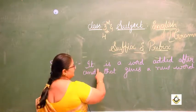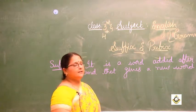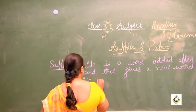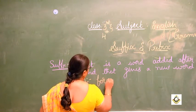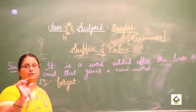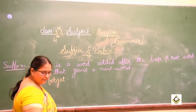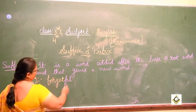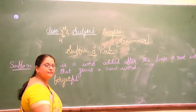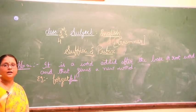I will give you an example here for suffix. Here I will write 'forget'. F-O-R-G-E-T. This 'forget' is the base word or the main word or the root word. When you add 'full' after it — forget + full — it becomes 'forgetful'. You added 'full' after the base word, and now it becomes a new word.